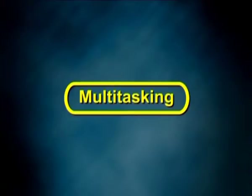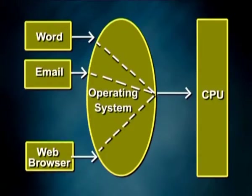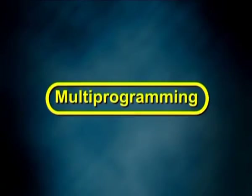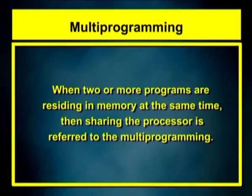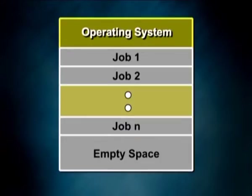Number 2 – Multitasking. Multitasking refers to a term where multiple jobs are executed by the CPU simultaneously by switching between them. Switches occur so frequently that users may interact with each program while it is running. Number 3 – Multiprogramming. When two or more programs are residing in memory at the same time, then sharing the processor is referred to as multiprogramming. Multiprogramming assumes a single shared processor and increases CPU utilization by organizing jobs so that the CPU always has one to execute.